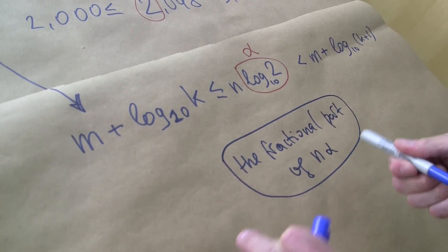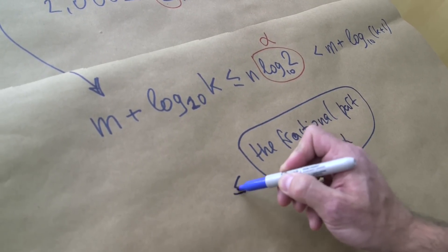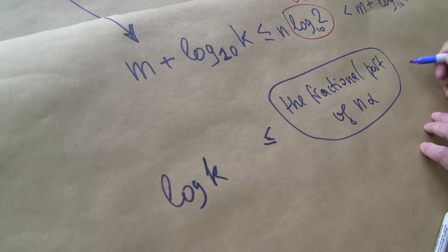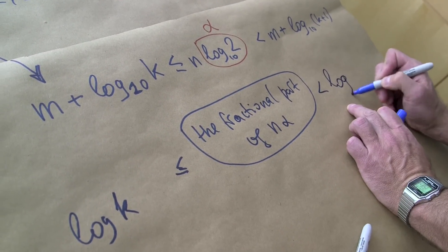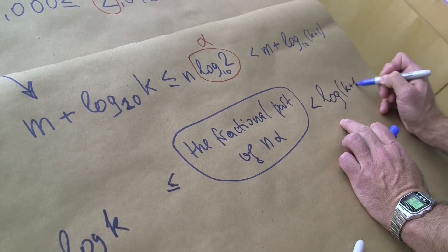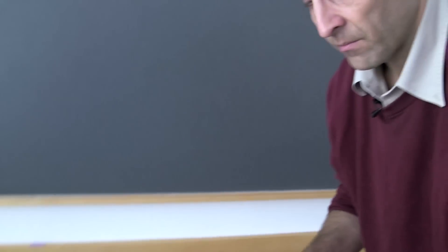So the fractional part of n alpha, this is what we want to study, and it is between log k and log k plus 1.